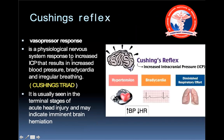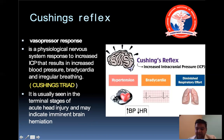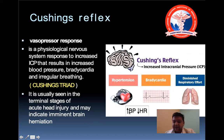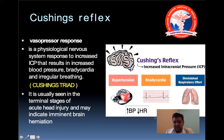Cushing's reflex is very important in neurotrauma. It occurs when there is increased intracranial pressure and is characterized by hypertension, bradycardia, and diminished respiratory effort — all three present simultaneously. This is the Cushing triad. It is different from hypovolemic shock, where you encounter reduced blood pressure with an increased heart rate. In a head injury patient, you encounter increased blood pressure with a reduced heart rate.